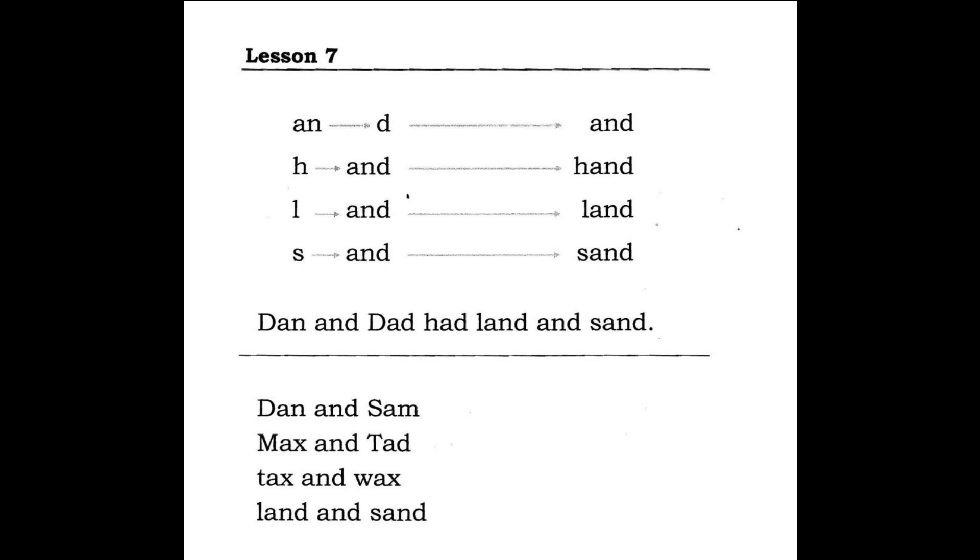Now, we introduce the letter L, which stands for the initial sound, such as words lab, leg, and lap. If we place the letter L in front of and, we get land.